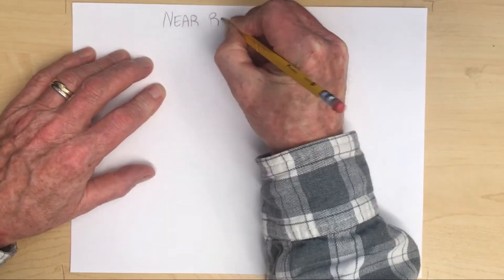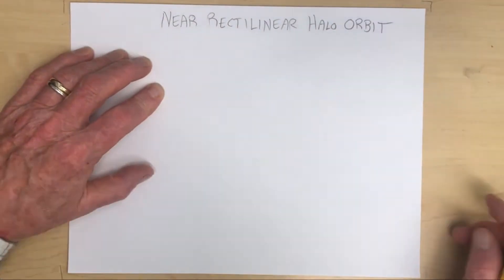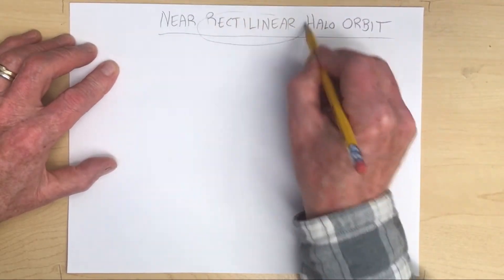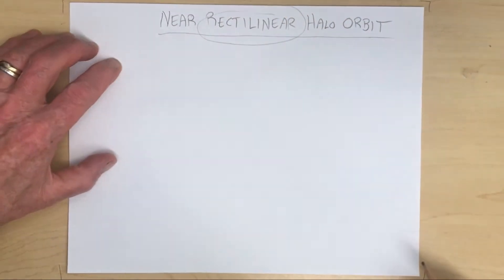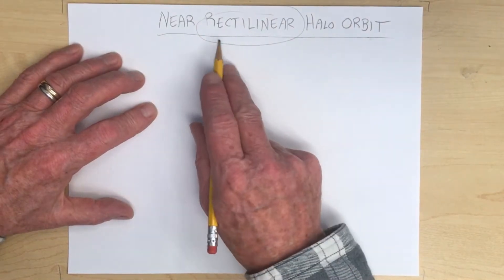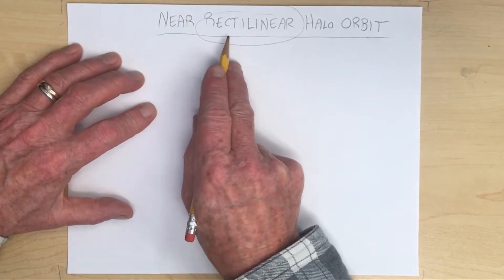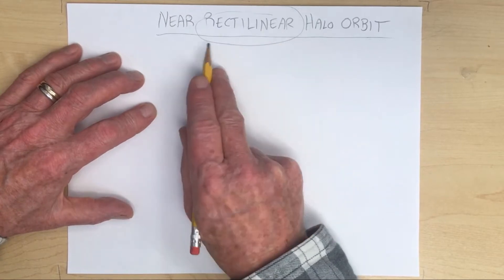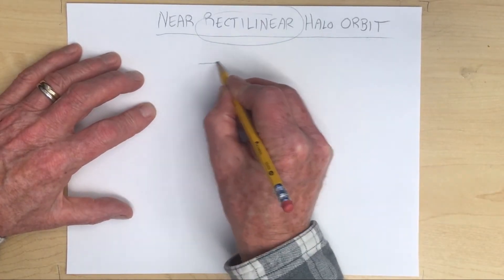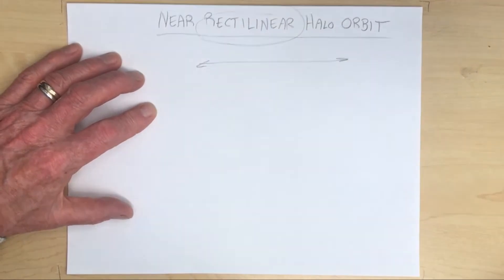So what is a near rectilinear halo orbit? Let's just break down this term. Let's start with the word 'rectilinear.' All that means is motion that is in a straight line. 'Rect' means straight, 'linear' means line. Rectilinear is motion in a straight line — motion along one dimension.